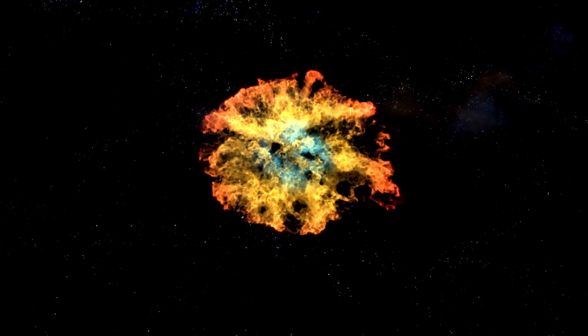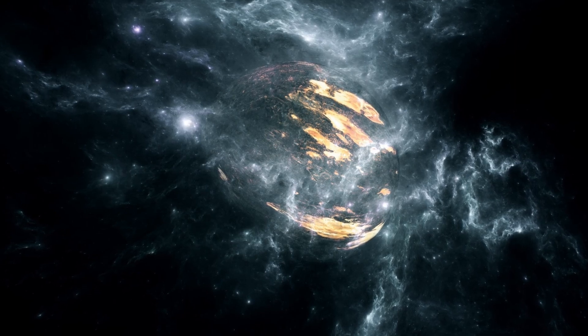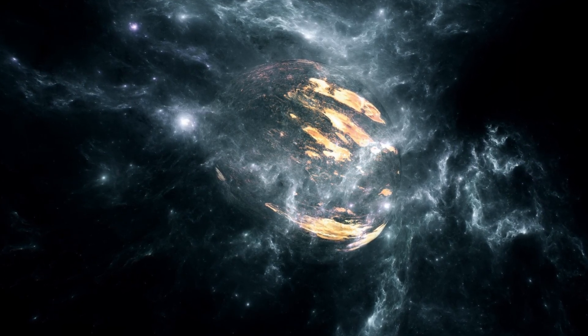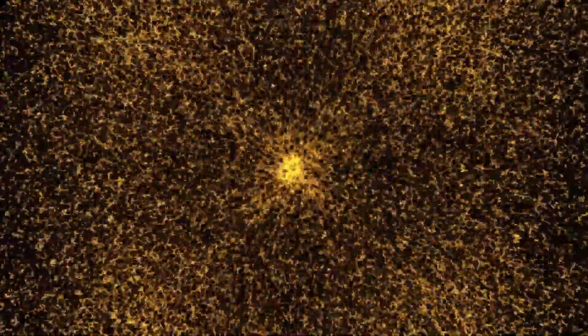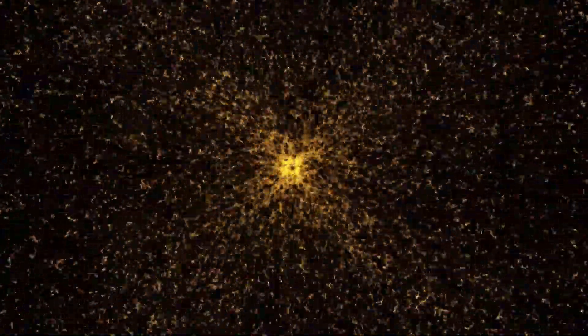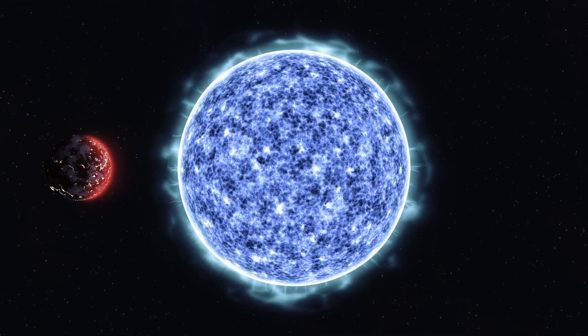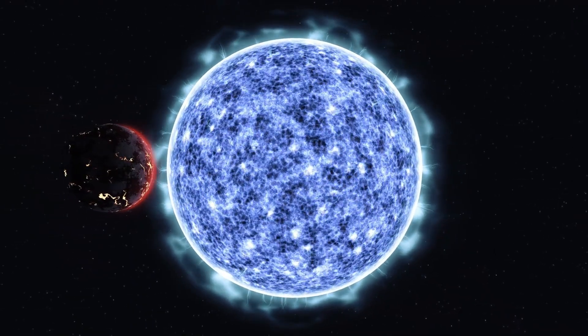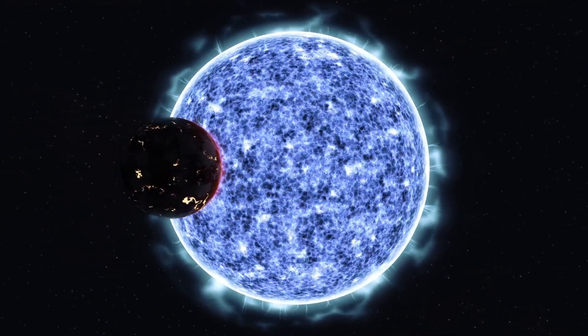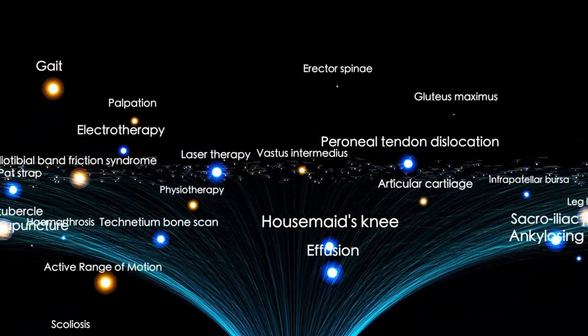This paradox, that a galaxy so ordinary in many ways could produce such extraordinary features, has become a central mystery. Adding to the intrigue is its location within what astronomers call a cosmic void. These are vast regions of the universe that contain far less matter, fewer galaxies, less gas, and fewer stars than average. The Milky Way itself is located within one such void, known as the KBC void. Alcyonius appears to reside within a similar low-density region, yet somehow it has developed radio jets that stretch millions of light-years across the void.